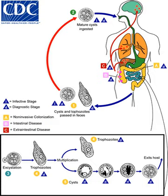Amoebiasis is usually transmitted by the fecal-oral route, but it can also be transmitted indirectly through contact with dirty hands or objects as well as by anal-oral contact. Infection is spread through ingestion of the cyst form of the parasite, a semi-dormant and hardy structure found in feces. Any non-encysted amoebae, or trophozoites, die quickly after leaving the body but may also be present in stool; these are rarely the source of new infections.